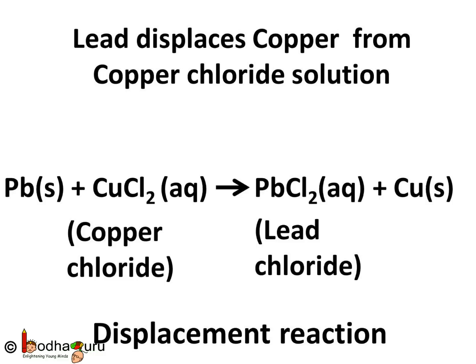Lead is denoted by Pb. So the chemical equation is: Pb + CuCl2 (copper chloride) gives PbCl2 (lead chloride) + Cu. So this is an example of a displacement reaction.